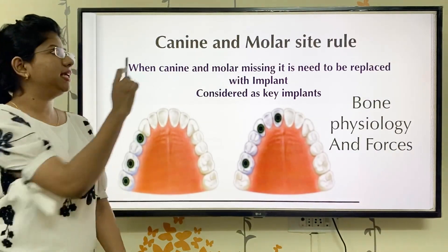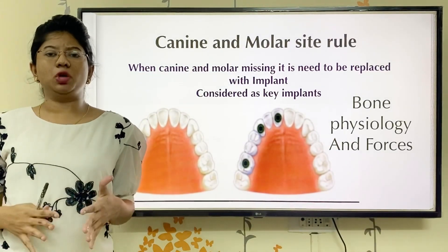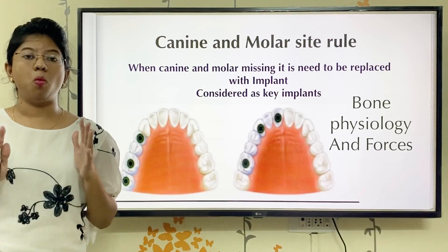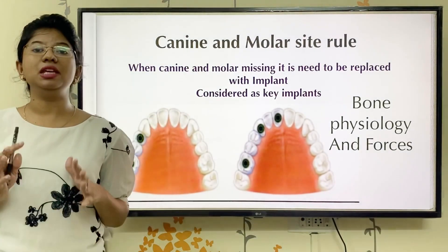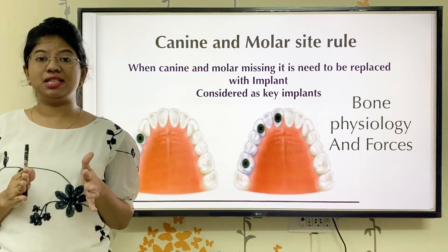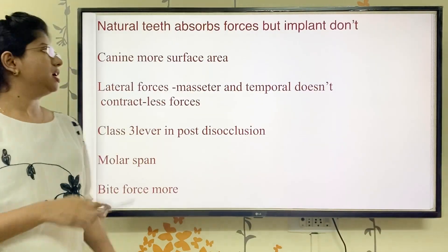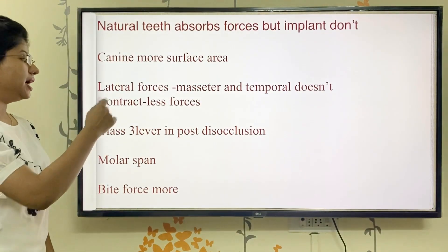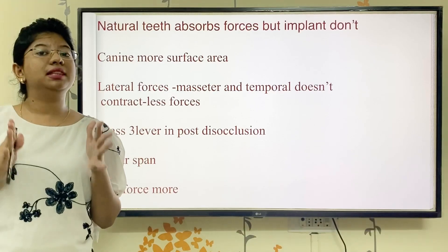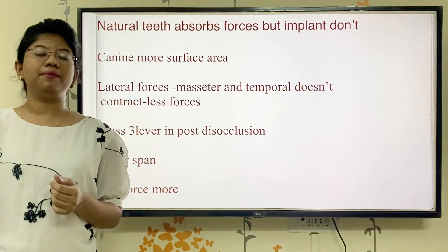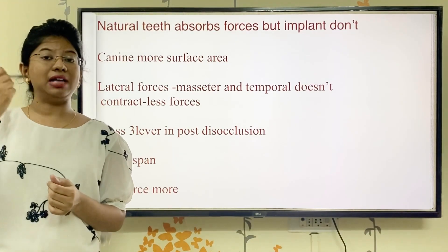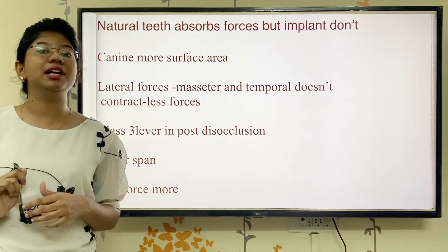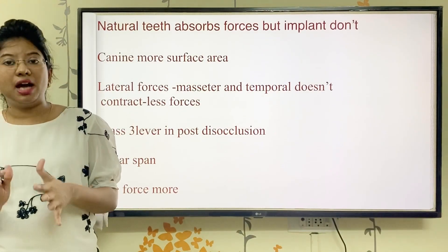The third rule is the canine and molar site rule. In any case, if your canine or molar is missing, you need to replace it with implants — because of bone physiology and the forces these teeth bear. For the canine: first, canine surface area is more. Second, there will be action of Class 3 lever when lateral forces come. Since the canine is in the anterior area, the contraction of temporalis and masseter muscle is less, so less force is seen in the anterior region. That's why you can consider the canine for implant placement.